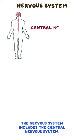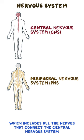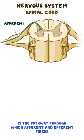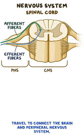The nervous system includes the central nervous system — the brain and spinal cord — and the peripheral nervous system, which includes all the nerves that connect the central nervous system to the muscles and organs. The spinal cord is the pathway through which afferent and efferent fibers travel to connect the brain and peripheral nervous system.